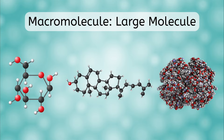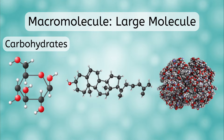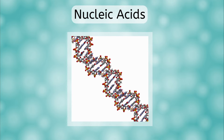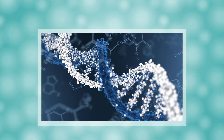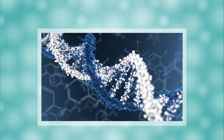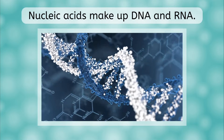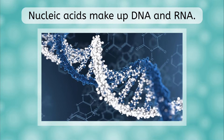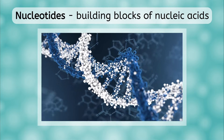Do you remember what a macromolecule is? We learned about them a few units ago. Macromolecule just means a large molecule. The three macromolecules you have learned about so far are carbohydrates, lipids, and proteins. The fourth category of macromolecule will be the focus of this lesson: nucleic acids. Nucleic acids are the macromolecules that make up DNA and RNA. Just like the other macromolecules, nucleic acids can be further broken down into specific building blocks. These building blocks are called nucleotides.